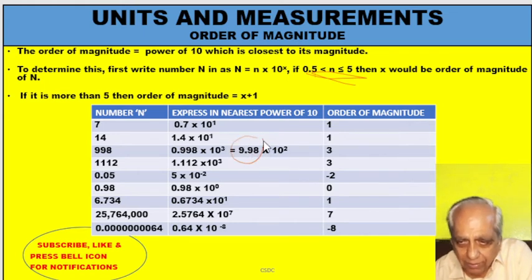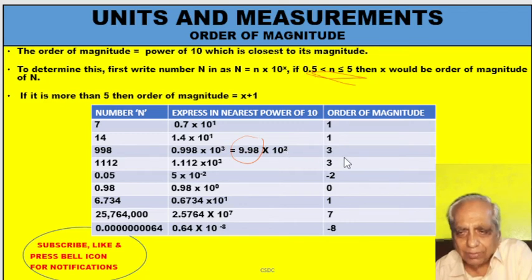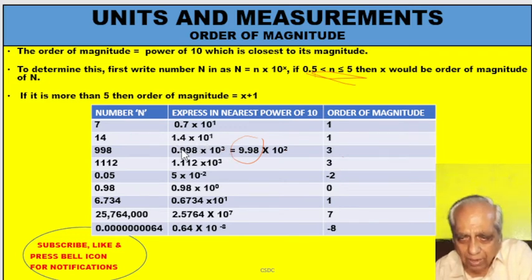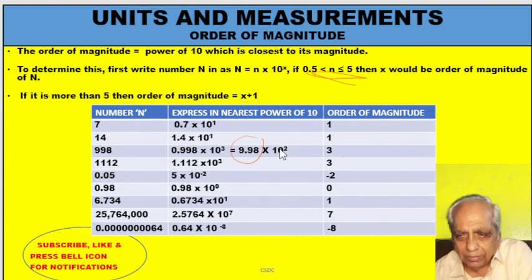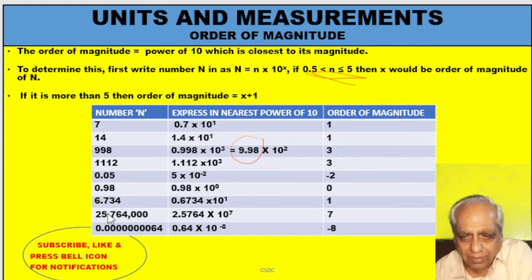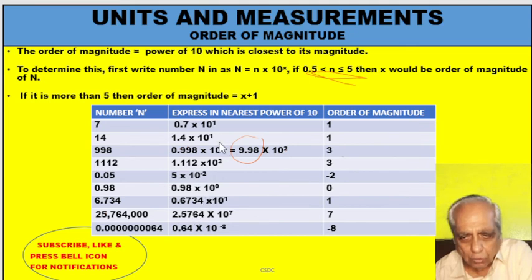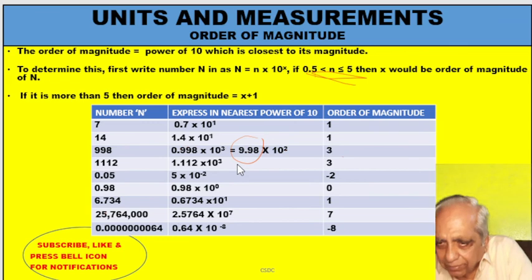If the coefficient N is more than 5, you must increase the index by 1. Write the number such that N is between 0.5 and 5 — then the index gives you the order of magnitude. All examples are given; you can go through them. For instance, 0.64 can be written as such since it is between 0.5 and 5, and the index gives the order directly.